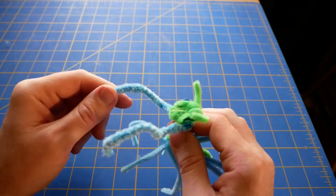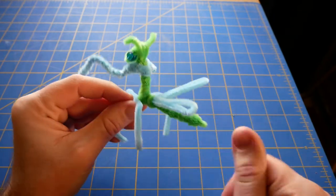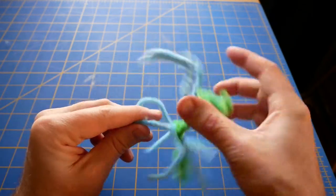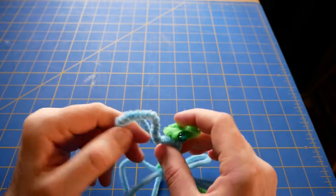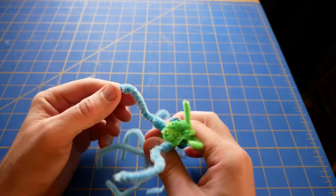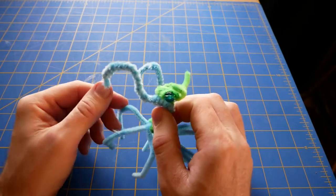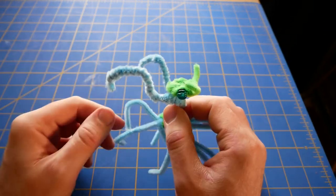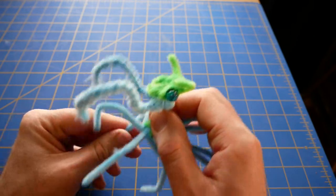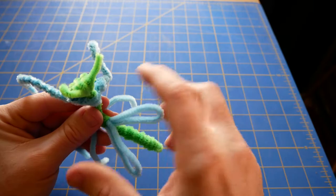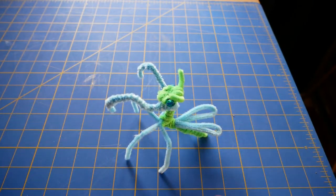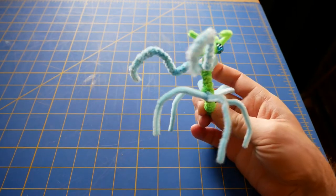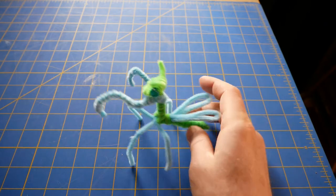And then you have your finished praying mantis. So you can adjust the arms such as they look like praying mantis more—this is where the bends are for them—and adjust the legs and the wings, and you've got a finished praying mantis. Thanks for watching.